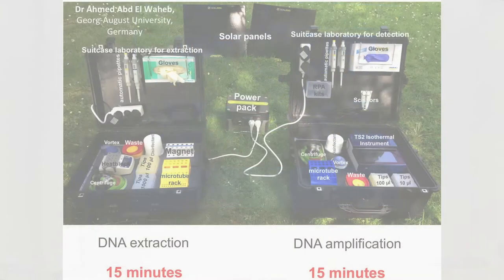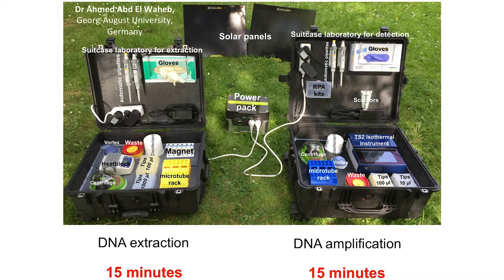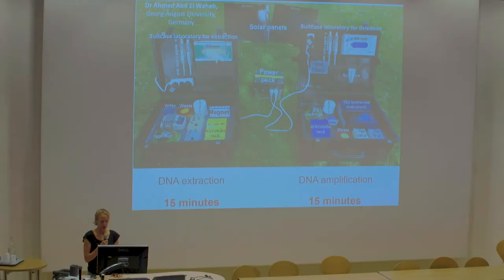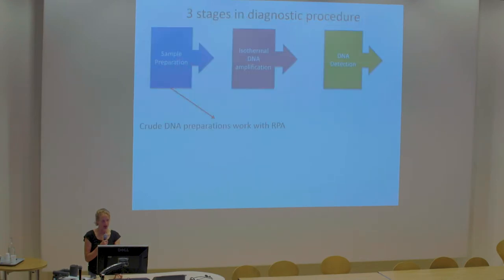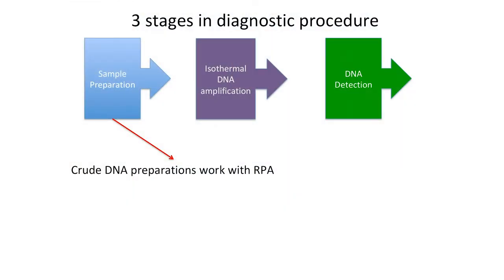This is a mobile suitcase developed by Dr. Ahmed in Germany. He developed these suitcases to take out in the field to do point-of-care test-to-treat scenarios, and has developed them for multiple pathogens and taken them to various countries with very good results. When we think about the different stages needed for RPA, we consider sample preparation and what crude DNA preparations we can get away with. There are some crude preparations on the market, such as this speed extract kit from Qiagen, which takes clinical samples, heats them up using a portable incubator, does magnetic bead extraction, and can process multiple samples in about 15 minutes.